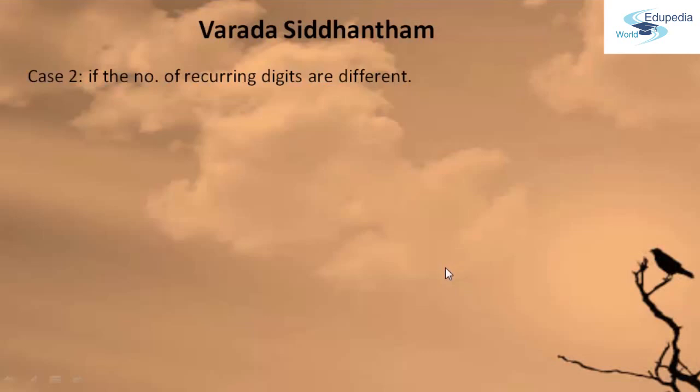The example that I am going to take in this session is 6,666,666 into 8,888. So guys, we observe very closely this example. In the multiplicand, the number of digits are more when compared to the number of digits that are in the multiplier, that is 8,888.